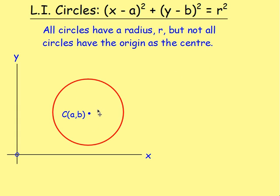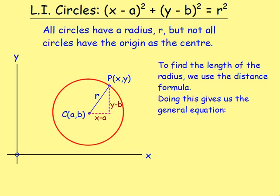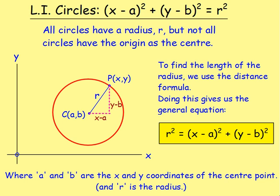Such as this one here — you can see it's a circle, it's got centre A, B, but it doesn't have the origin as the centre. Let's put a point on this circle, we're just calling this point P. It's obviously got an x-coordinate and a y-coordinate. We could draw in the radius between the centre and this point P, and to find the length of the radius, we can use the distance formula, which is basically Pythagoras in disguise. You're forming a right-angle triangle, where the length along here would be x minus a, and this length here would be y minus b.